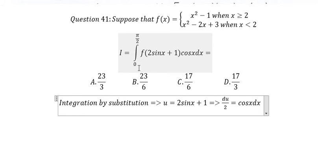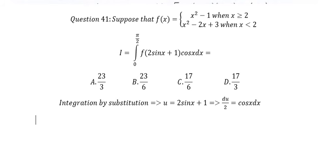And now we need to change the limits 0 and π over 2. If x equals 0, so we put x in here and we find the value of u. That's the number 1.